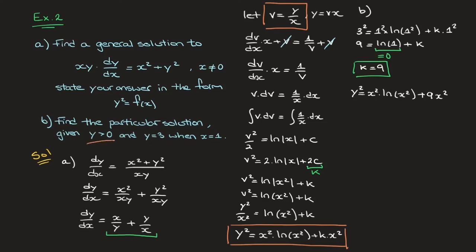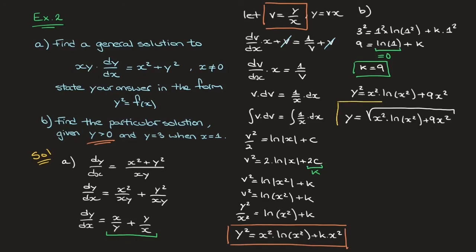Replacing k by 9, we can state that y squared equals x squared times ln of x squared plus 9x squared. But given we were told that y is greater than 0, we need to find an expression for y, not y squared. Applying the square root to each side, y equals the square root of x squared times ln of x squared plus 9x squared. Notice that I didn't write plus or minus the square root because y is greater than 0. And that's the final answer.